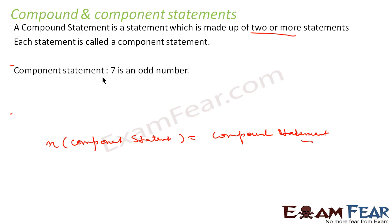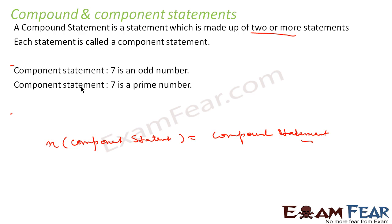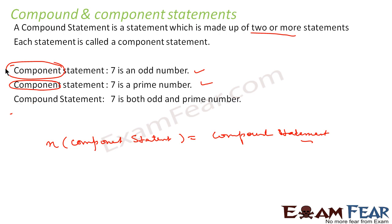Let's take an example. Let's suppose this is a component statement: '7 is an odd number' — this is a single statement, so it's a component statement. We'll take one more statement: '7 is a prime number' — this is also a component statement. Please remember, this is a component statement, not a compound statement, because each is a single statement. If you combine these two statements, you get a compound statement.